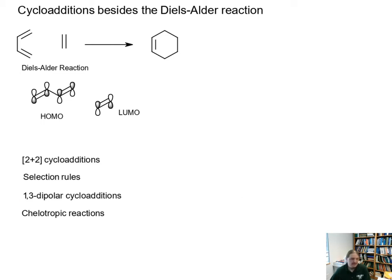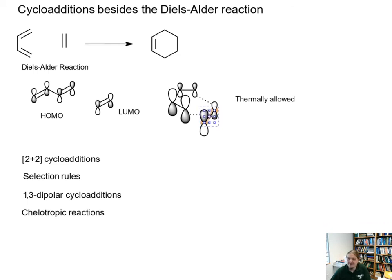Usually Diels-Alder reactions occur between the HOMO of the diene and the LUMO of the dienophile, though that can be reversed. When you redraw these orbital pictures in a way that makes them look more like the orientation that the molecules need to be in, we can see very clearly that we're going to get constructive orbital overlap. It's important to know that the Diels-Alder reaction is thermally allowed and symmetry allowed under thermal conditions.